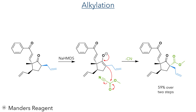This alpha position was once again deprotonated with sodium HMDS and this time was reacted with Manders reagent. This added to the carbonyl and formed the target methyl ester upon the elimination of cyanide. Overall this produced the difunctionalized alpha position in a 59% yield over two steps.